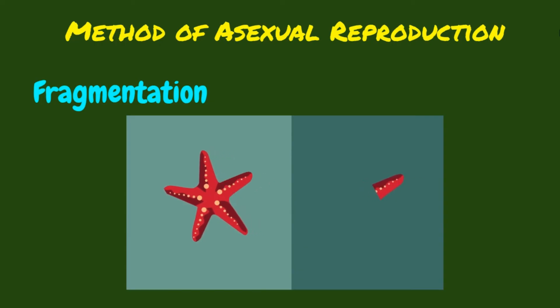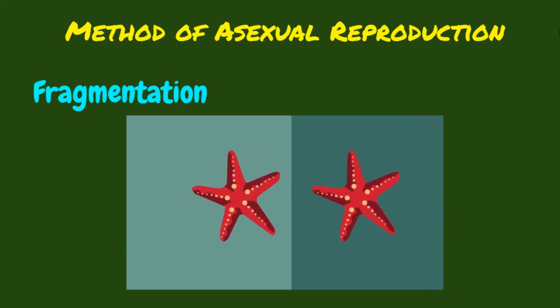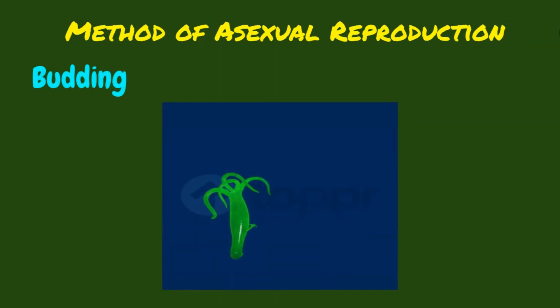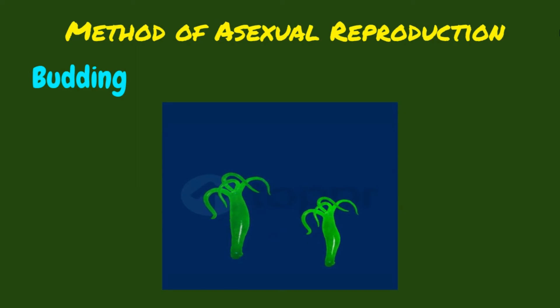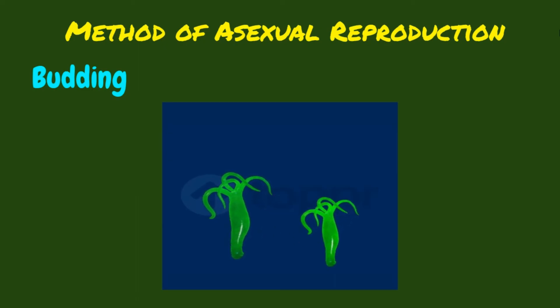Starfish, however, are also capable of sexual reproduction. Budding occurs when a parent cell forms a bubble-like body. The body stays attached to the parent cell while it grows and develops. When the body is fully developed, it breaks away from the parent cell and forms a new organism. An example of budding is found in hydra.